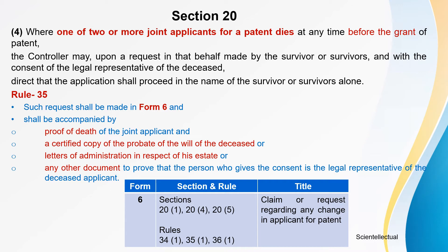Under Rule 35, Form 6 is also mentioned and should be accompanied by proof of death of the joint applicant and a certified copy of the probate of the will of the deceased, or letter of administration in respect of the estate, or any other document to prove that the person giving consent is the legal representative of the deceased applicant.